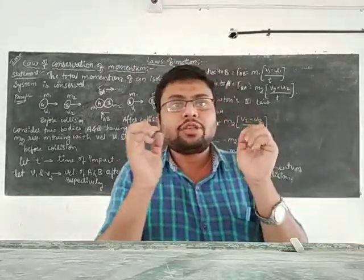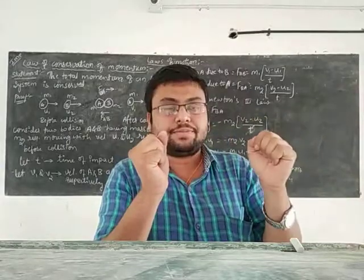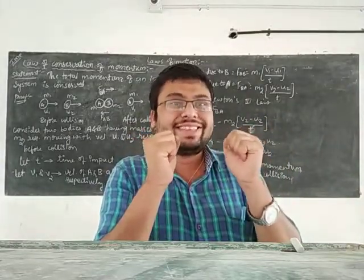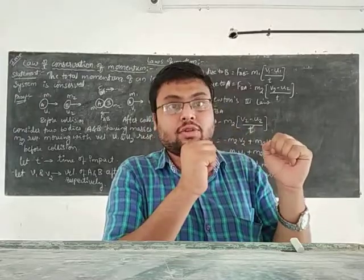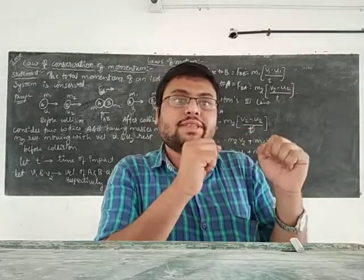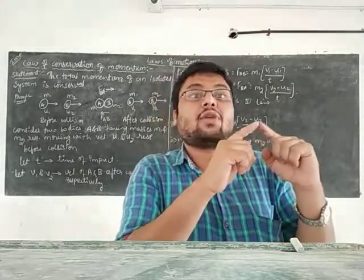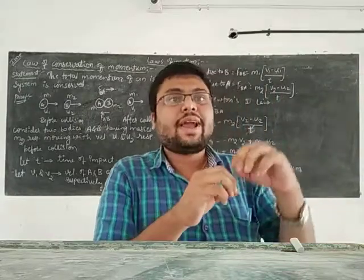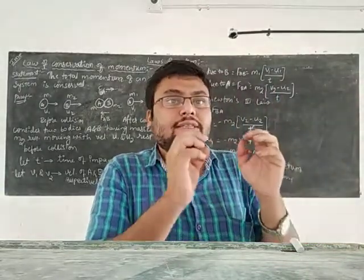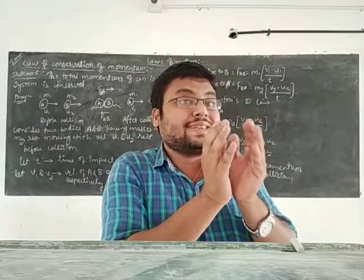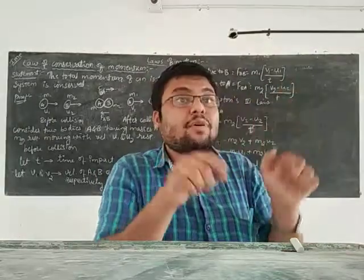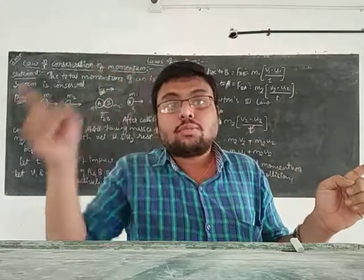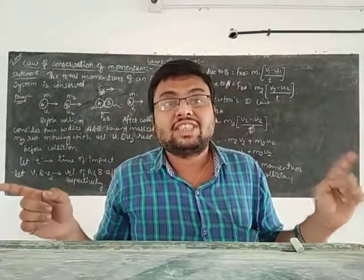After a certain time, both bodies are going to collide with each other. When they collide, their velocity will change. After the collision, if we calculate the total momentum of the whole system — the momentum of the first body plus the momentum of the second body — that sum will be equal to the total momentum before collision.